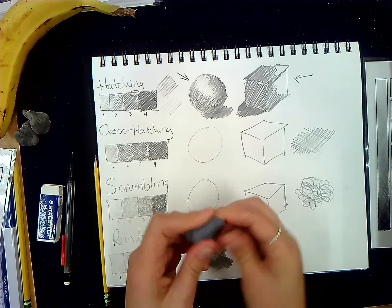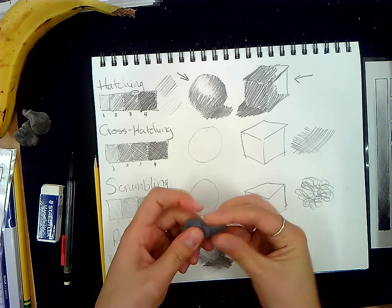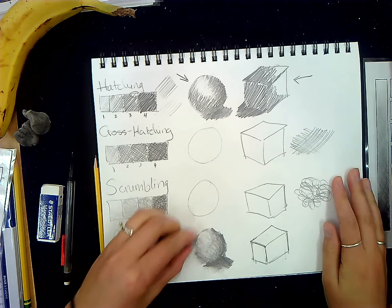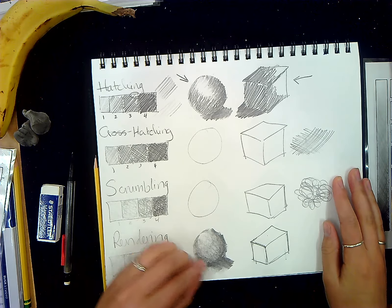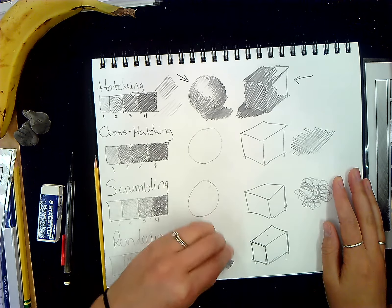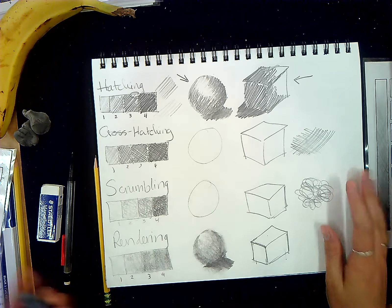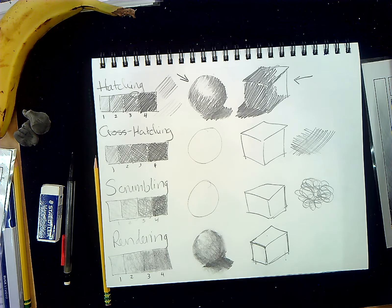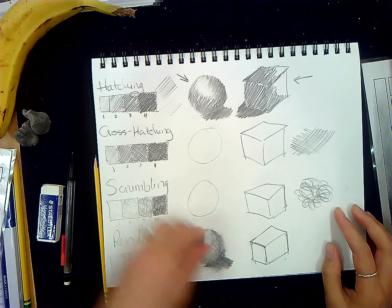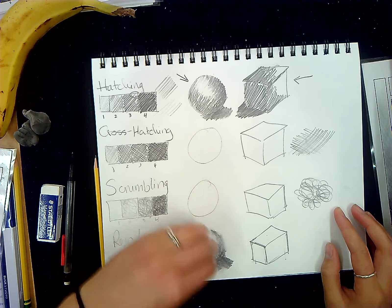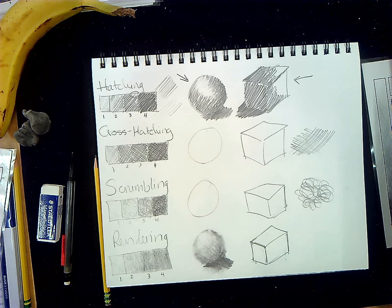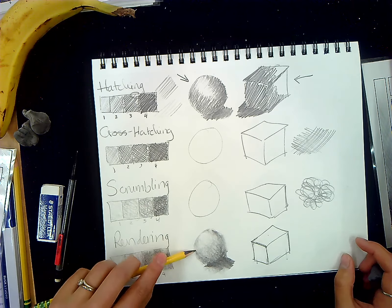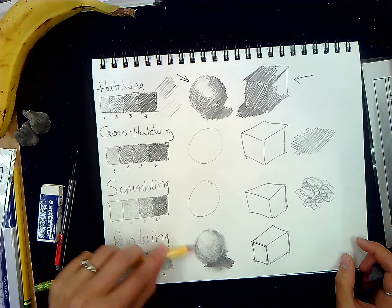All right. So, this is really messy. This is where your kneadable eraser is going to come in. So, I'm going to knead this guy into a point and then carefully erase the areas that I don't want to have marks. So, I know that my highlight is supposed to be the lightest, but I got some dark shadow here. Your kneadable eraser gently lifts out graphite, as you can see.